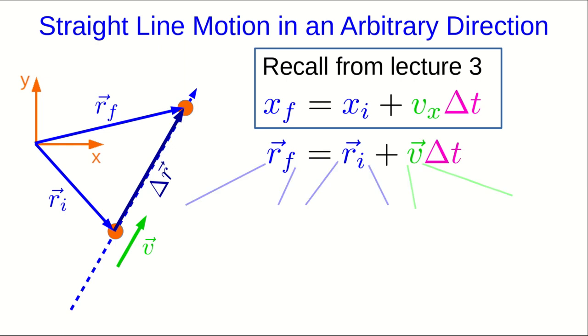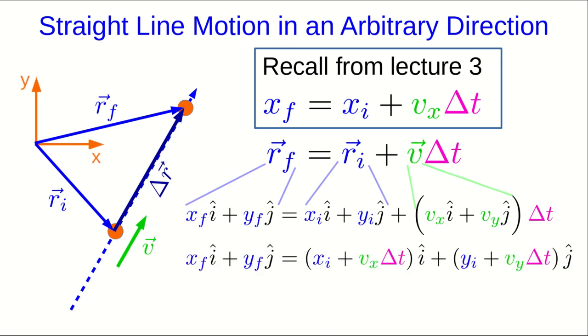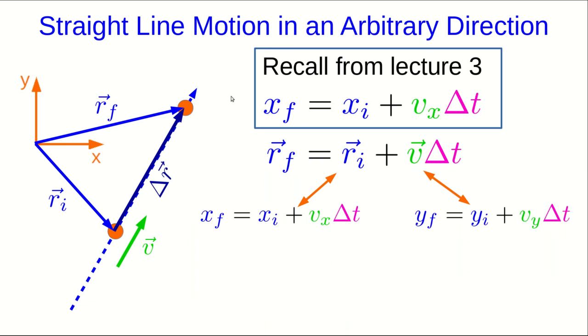Let's expand all of these vectors out into their components. And now let's collect terms. So we collect all the i-hats and the j-hats on the right-hand side. Now you can just pull out the i-hats into one equation, and you can pull out the j-hats into another equation. And notice that this equation down here for x_f is exactly the one we saw back in lecture 3.